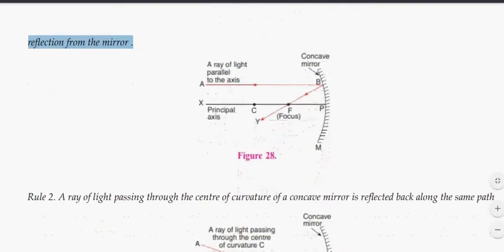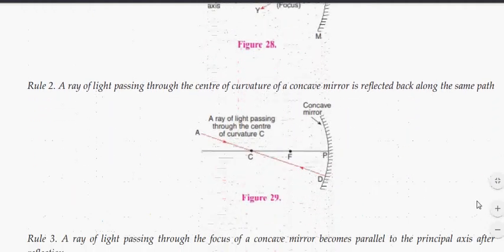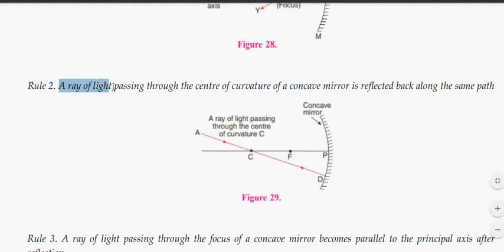This is the first rule. Second rule: If a ray of light passing through the center of curvature of a concave mirror is reflected back along the same path.